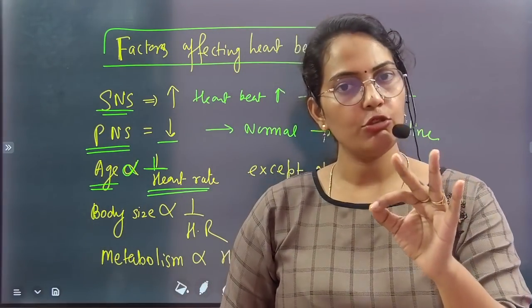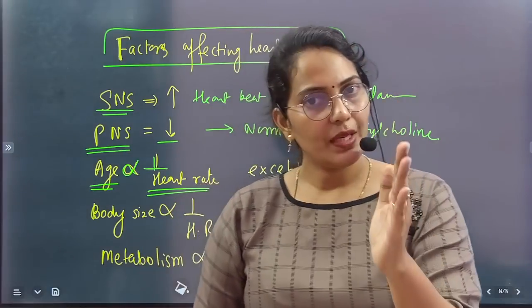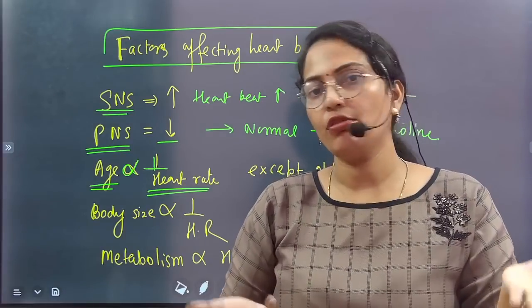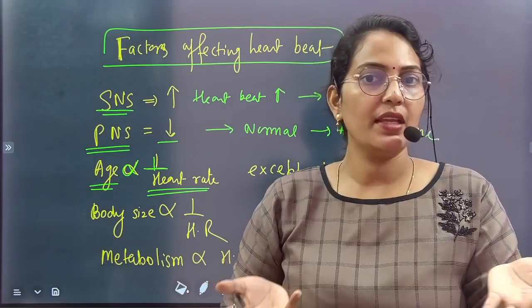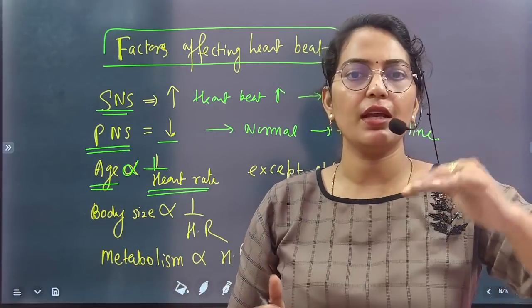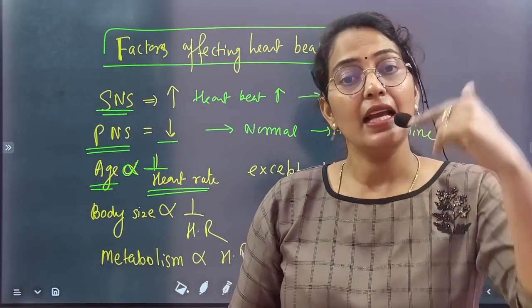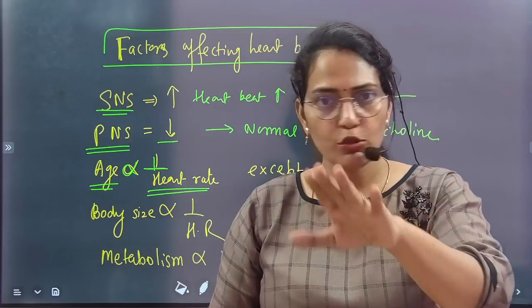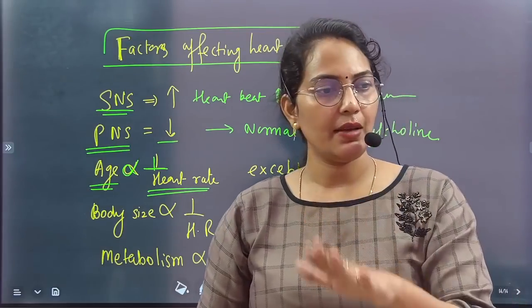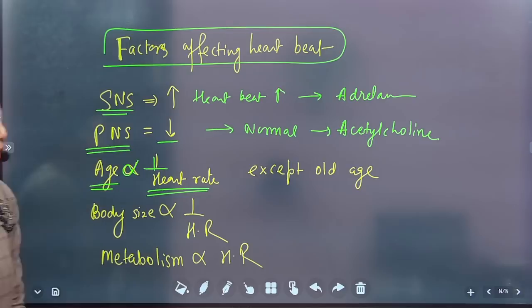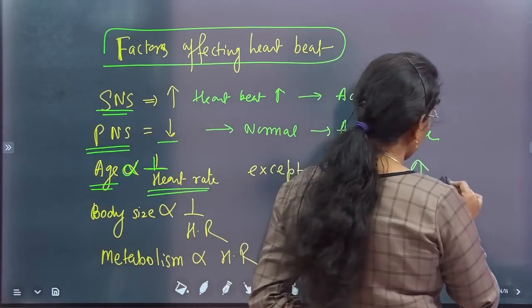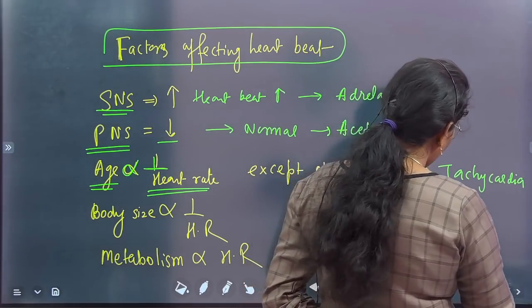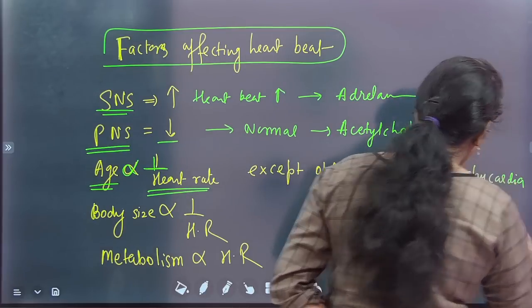For example, when a child is born, heart rate is around 150. Then as the child grows, it comes down — 130, 120, 110. During puberty it is 90–100, and in adults it is 70–80. So as age increases, heart rate decreases. However, in old age, heart rate again increases — that is an exception. Increased heart rate is called tachycardia, and decreased heart rate is called bradycardia.